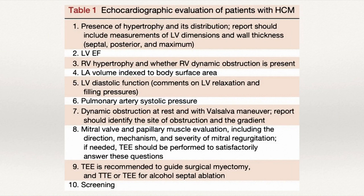From ASC guidelines, when doing an echo on a patient with hypertrophic cardiomyopathy, we want to screen for any presence of hypertrophy — all walls should be assessed since it can be asymmetric, including septal, posterior, and anterior walls, documenting the maximal thickness. We assess LV ejection fraction, which is mostly preserved, but decreased EF is a marker of bad prognosis. We also assess the right ventricle for hypertrophy, dynamic obstruction, LA volume index, LV diastolic dysfunction, pulmonary artery pressure, and dynamic obstruction.